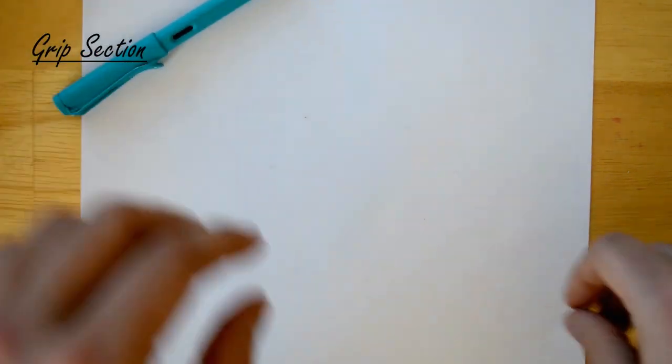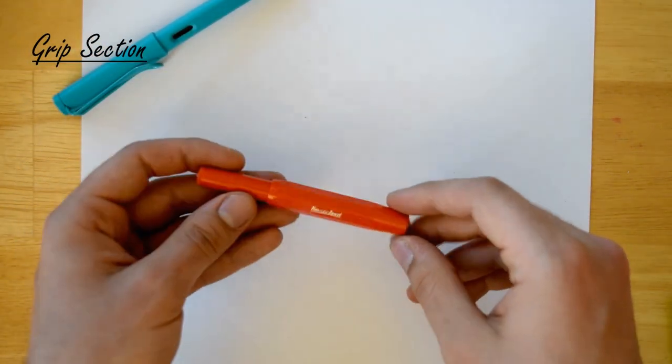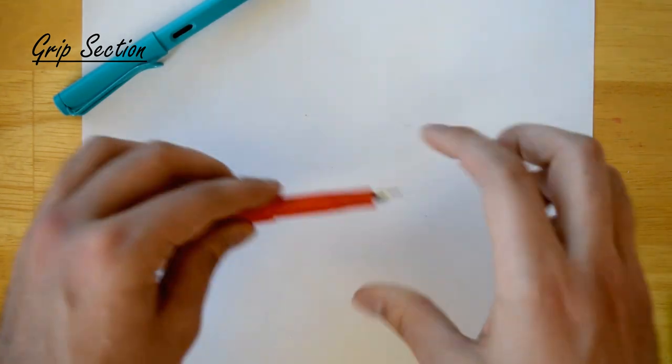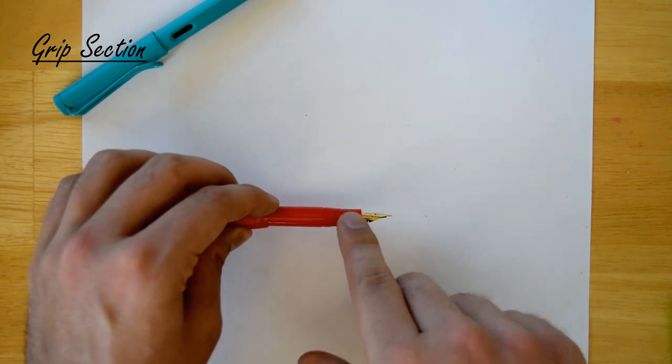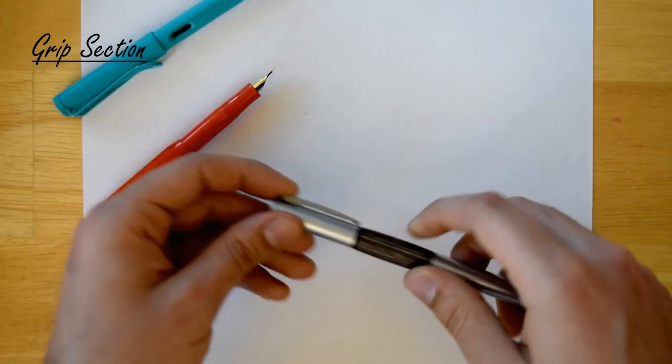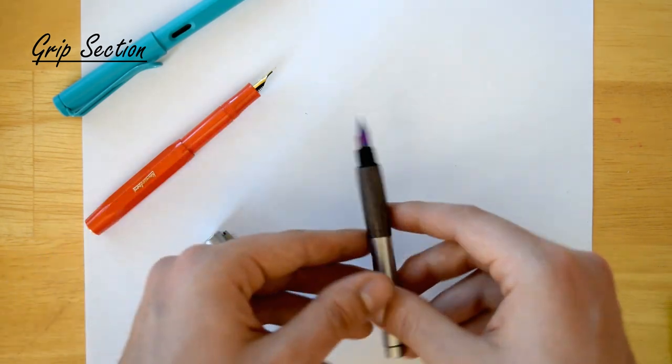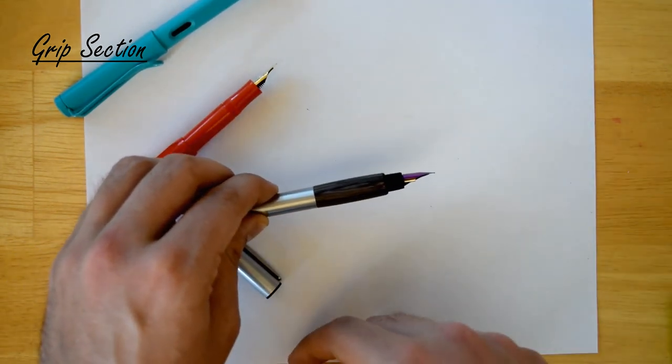Most common grips though are circular. For example, we have this Kaweco Sport in red where the grip section is circular and concave. You also have circular convex grips, for example on this Lamy Accent, where it is circular but convex, more like a bubble. So these are the three main shapes of grips.